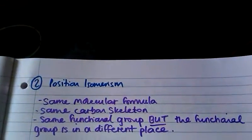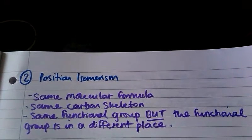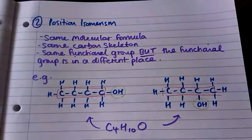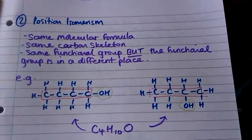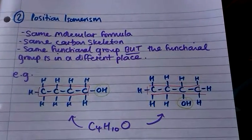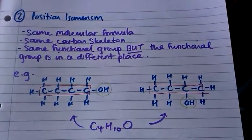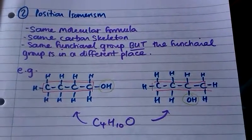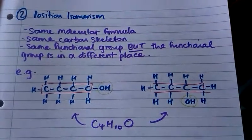Secondly, we have position isomerism. Positional isomers have the same molecular formula, the same carbon skeleton, and the same functional group, but that functional group is in a different place in the compound. For example, with the formula C4H10O, both structures have the same carbon skeleton of four carbons in a straight line and the same functional group OH — an alcohol — but on the left the alcohol is on the end carbon, and on the right it's on the second carbon along. These two are positional isomers.